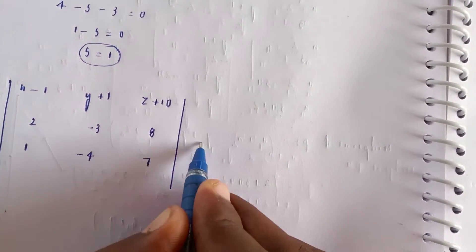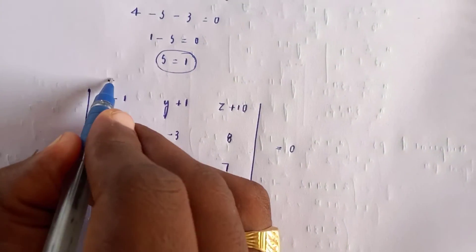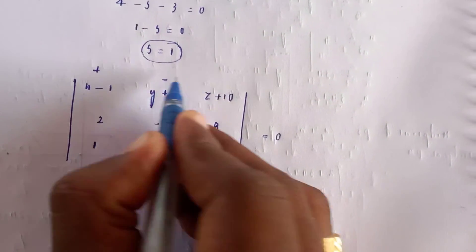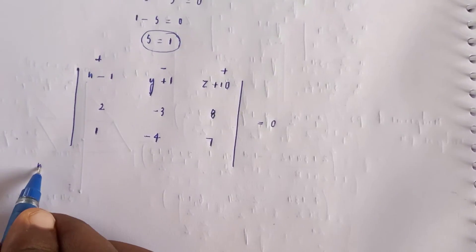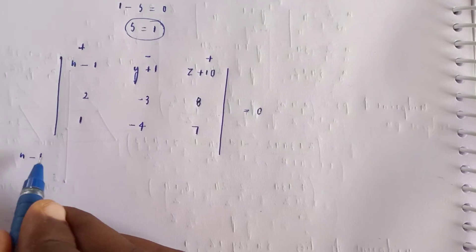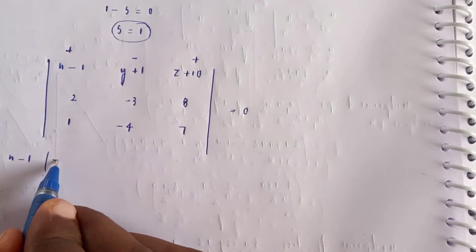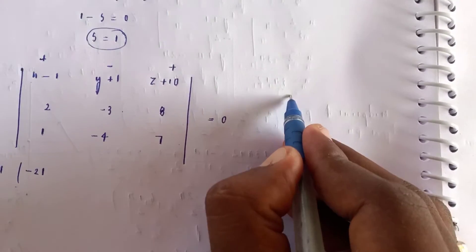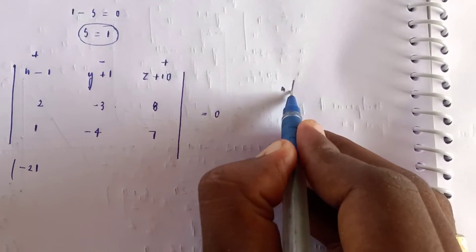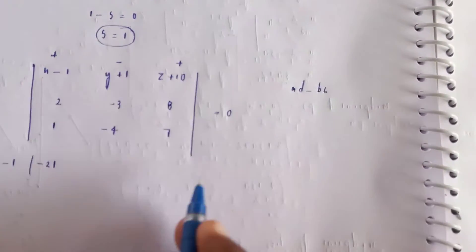The plane equation uses a 3×3 determinant. The first row is (x−1, y+1, z+10). Second row: direction ratios of Line 1 are (2, −3, 8). Third row: direction ratios of Line 2 are (1, −4, 7). Expanding along first row using AD−BC cofactors.